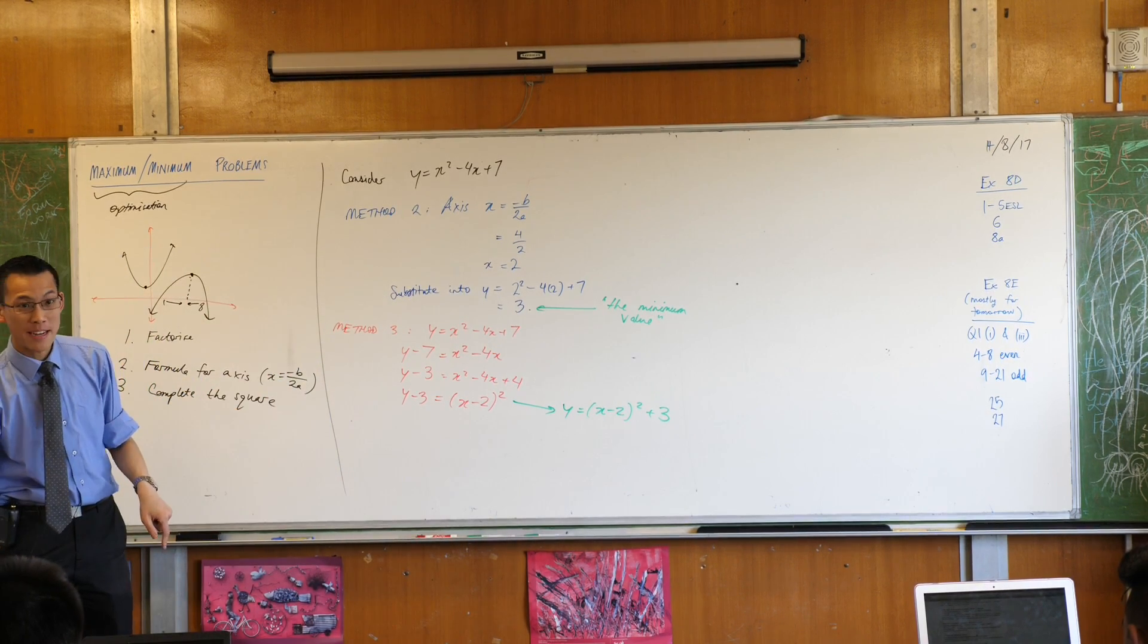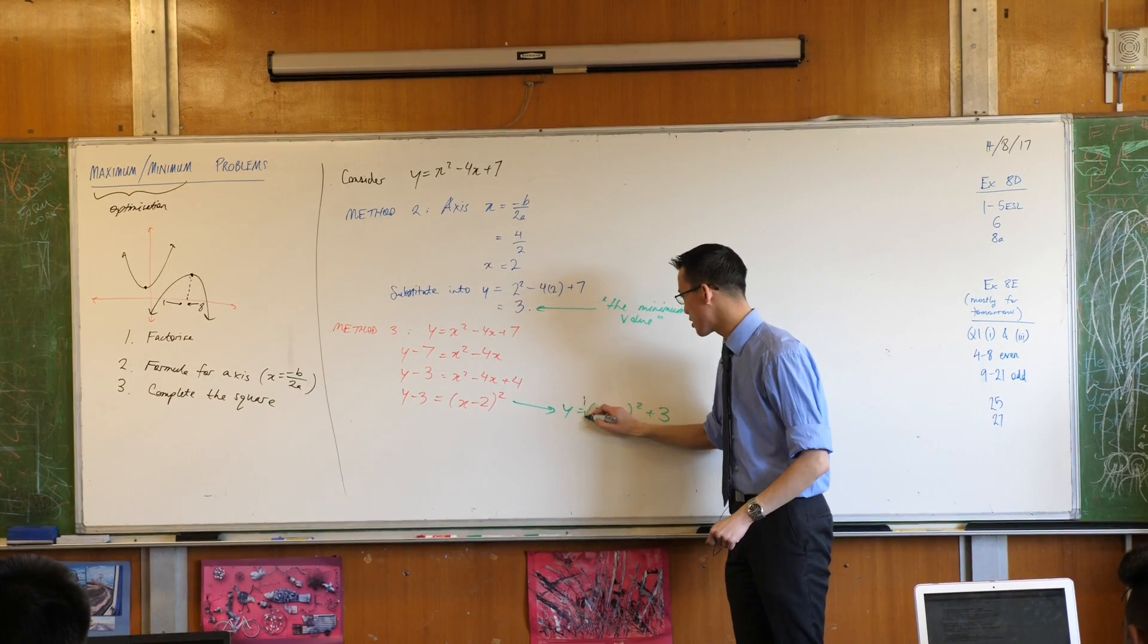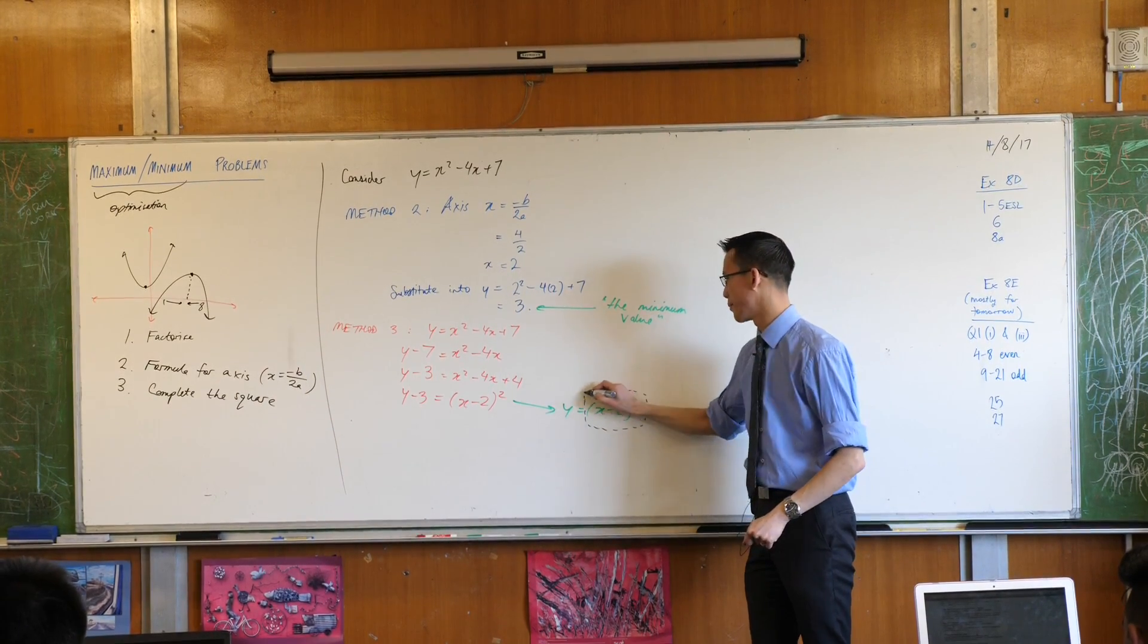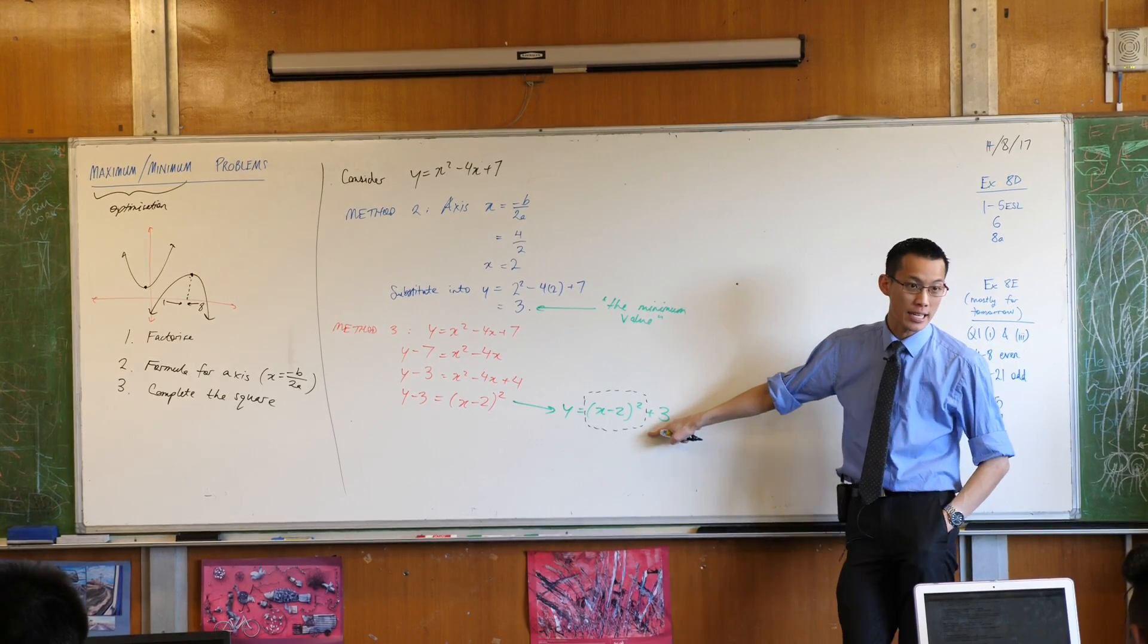Like so. Okay, see that x minus 2 all squared? x minus 2 all squared. Because it's a square, what is the smallest value that that thing can possibly take?